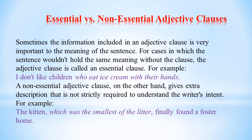A non-essential adjective clause gives extra description that is not strictly required to understand the writer's intent. For example, 'The kitten, which was the smallest of the litter, finally found a foster home.' The adjective clause gives extra information but isn't necessary to get the gist of the sentence about the cat finding a home. Non-essential adjective clauses are set off with commas to show that they aren't strongly connected to the rest of the sentence.